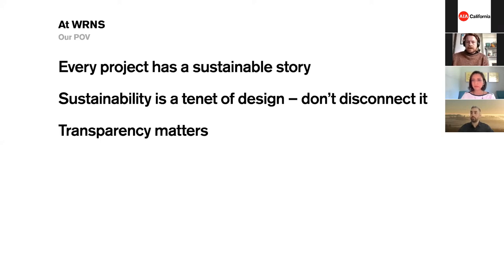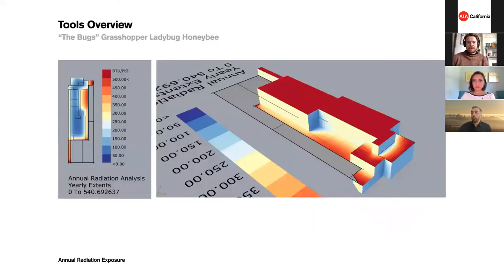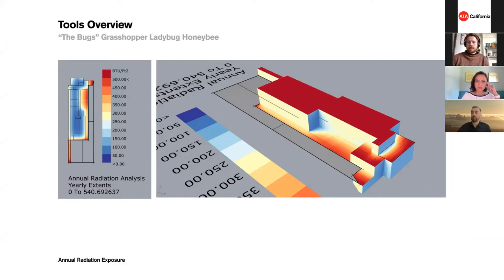One of the first tools WRNS uses is Insight. They've been working with Insight for two or three years, finding the best ways to use it. Since they are a very Revit-heavy firm, this tool is seamless for them — for example, doing annual daylight exposure comparisons to understand how much light can be brought into a relatively small building. They also affectionately call it 'the bugs' — Ladybug, Honeybee, and Grasshopper — which help in early stages to inform design decisions in massing, programmatic elements, and circulation. A lot of different site approaches can be driven by what the model informs.